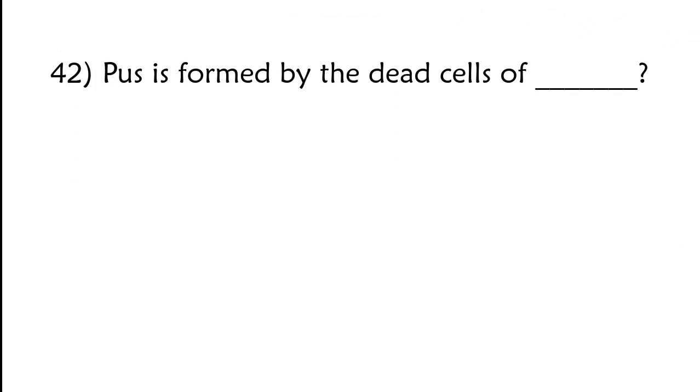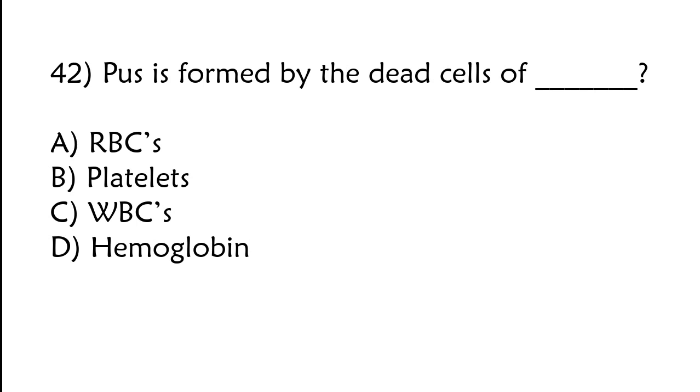Pus is formed by the dead cells of RBCs, platelets, WBCs, or hemoglobin. The correct answer is option C, WBCs.